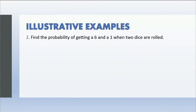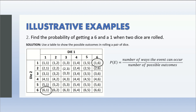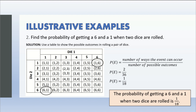Example number two: find the probability of getting a six and a one when two dice are rolled. We use a table to show the possible outcomes in rolling a pair of dice. We could possibly get both one, or one and two, or one and three, and so on and so forth. In total, we have 36 possible outcomes. And the outcomes with six and one as a result is two — we have one and six, and six and one. Using the probability formula: the number of ways six and one will occur is two, and for possible outcomes we have 36. Two over 36 can be simplified as one over 18. Therefore, the probability of getting a six and a one when two dice are rolled is one over 18.